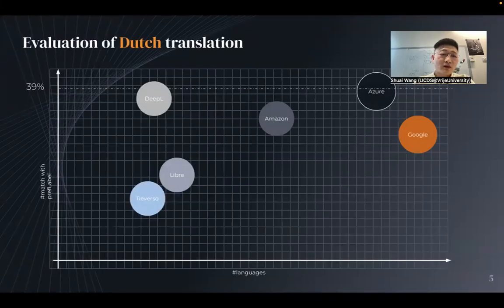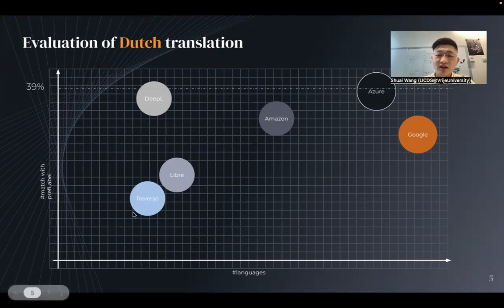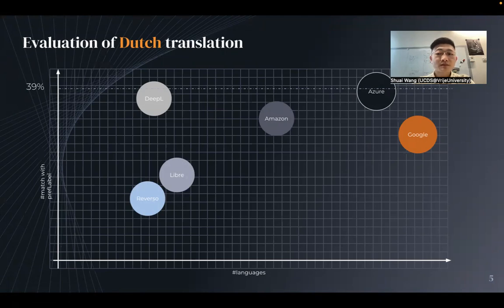Our first round of tests shows that Libra and Azure are not as stable — sometimes they fail to translate specific LGBTQ+ vocabulary terms, and sometimes they simply fail to return anything. For the rest, performance is not very good either. So we selected four translators to proceed.